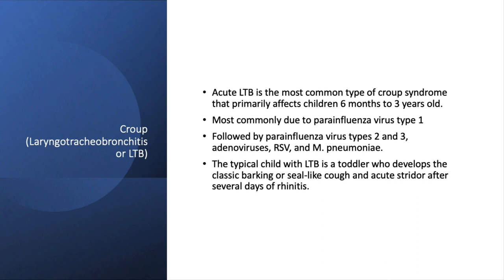Laryngotracheobronchitis is exactly what it sounds like — it is inflammation of the upper airway. It's the most common type of croup syndrome; in fact, most people just call this croup. It's most commonly due to parainfluenza virus type 1, however there are many viruses that can cause this. In a child who has viral symptoms and a barking or seal-like cough, they likely have croup. If the obstruction of the upper airway is bad enough, you'll hear stridor as well.